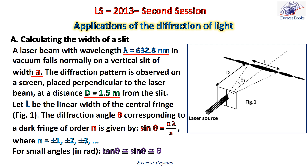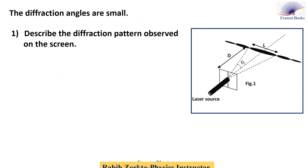Let L be the linear width of the central fringe. The diffraction angle theta corresponding to a fringe of order n is given by sine theta equals n lambda over A, where n is a non-zero integer. For small angles in radians, take tangent theta approximately equal to sine theta, which is approximately equal to theta. In all the following questions, the diffraction angles are small.